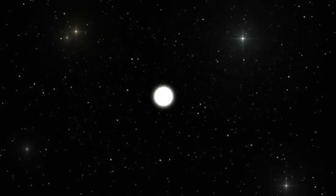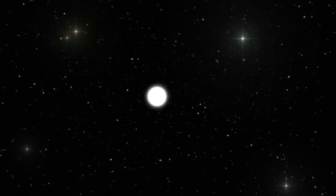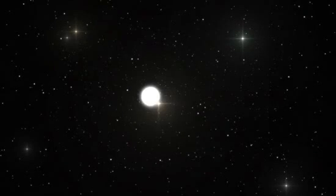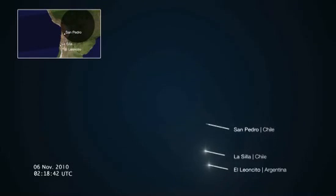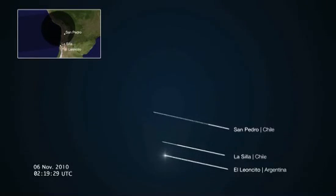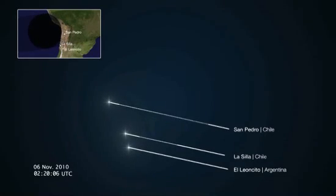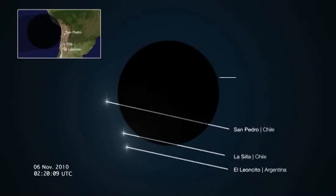Occultations are rather like eclipses. The background star disappears behind the object and reappears on its other side. As viewed from Earth, the brightness of the background star suddenly drops and then returns equally suddenly to its previous level. By looking at these two events, astronomers can measure the size and shape of the occulting foreground object. If they also know the mass of this object, they can then determine its density.